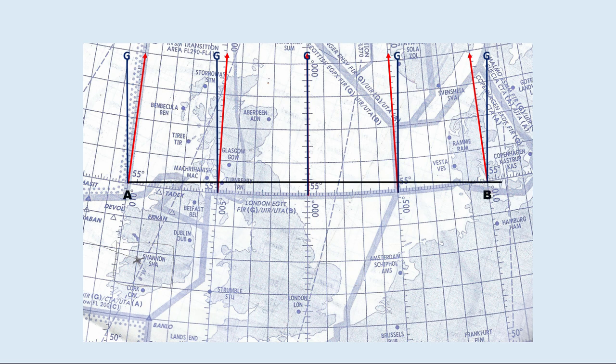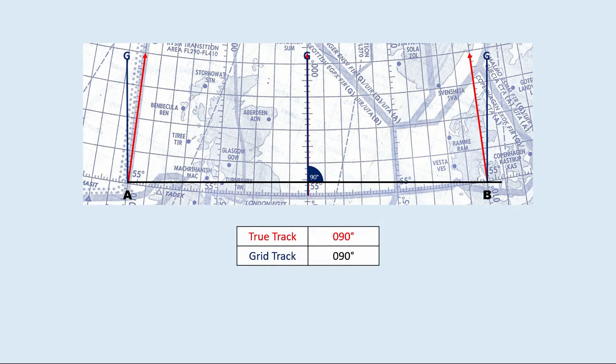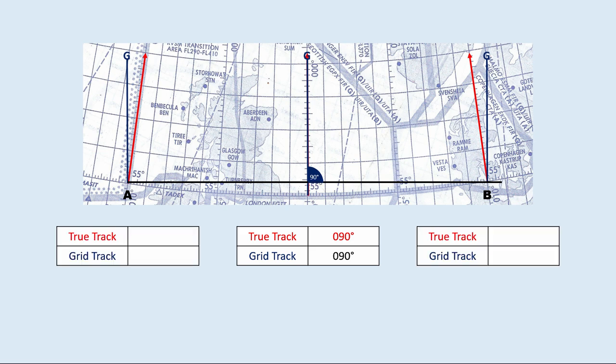Next, I will draw a line from A to B, focusing our attention at point A, the prime meridian, and point B. At the prime meridian, both true track and grid track are 90 degrees. At point A, true track — the angle between true north and the track — is 80 degrees, and the grid track — the angle between grid north and the track — is 90 degrees. At point B, true track is 100 degrees and grid track is 90 degrees.